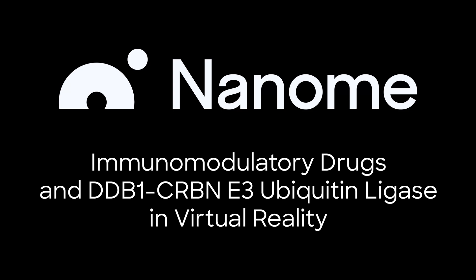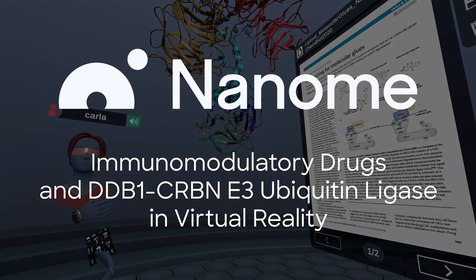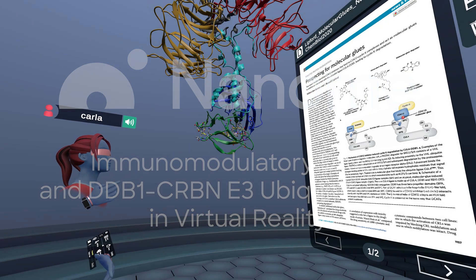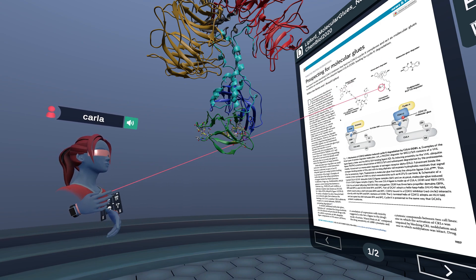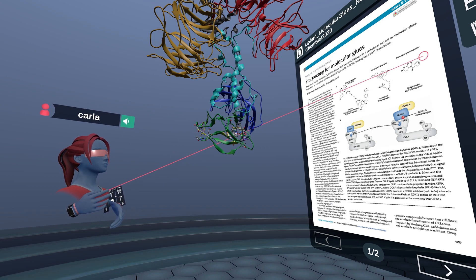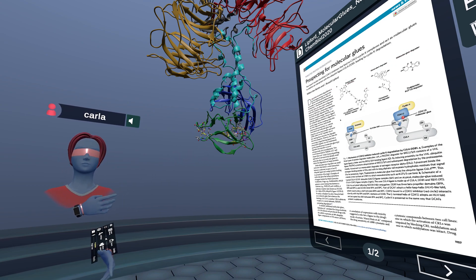Today in Nanome, we're going to be talking about one of the three main types of protein degrader molecules. A 2020 Nature Chemical Biology paper by Dunbustin and Litford describes the three main types: first are the protacs, or proteolysis-targeting chimeras; second are the monovalent degraders; and third are the molecular glue degraders.